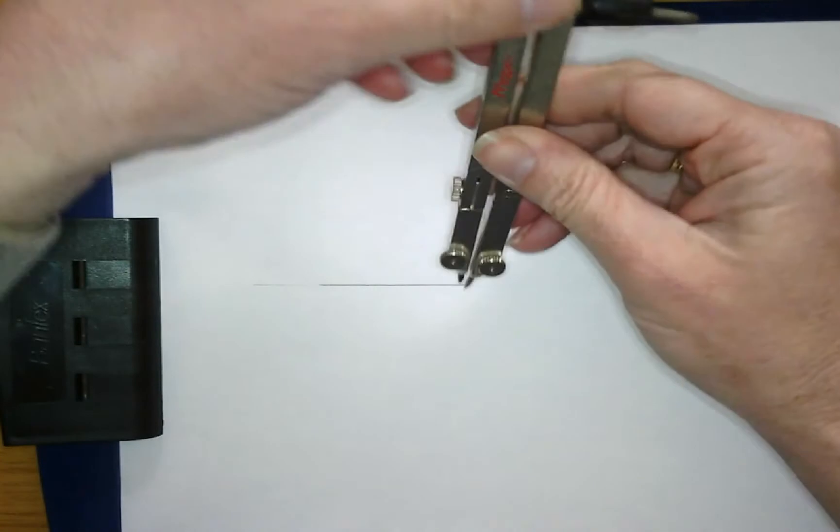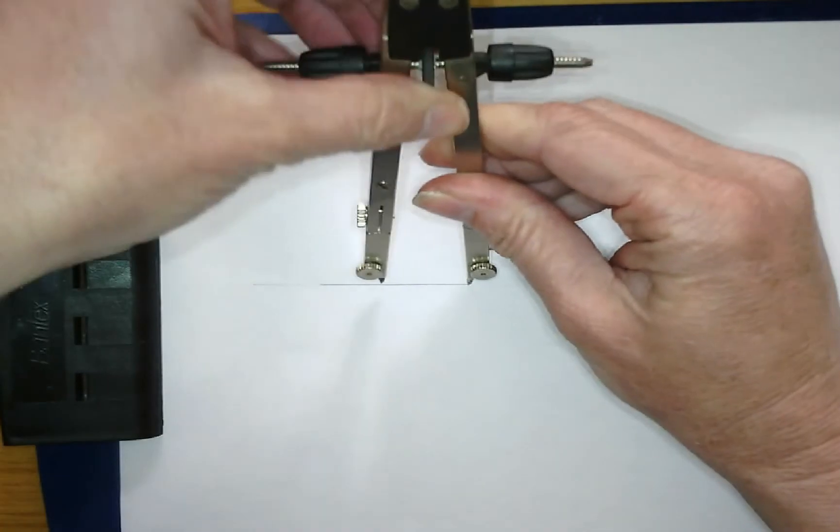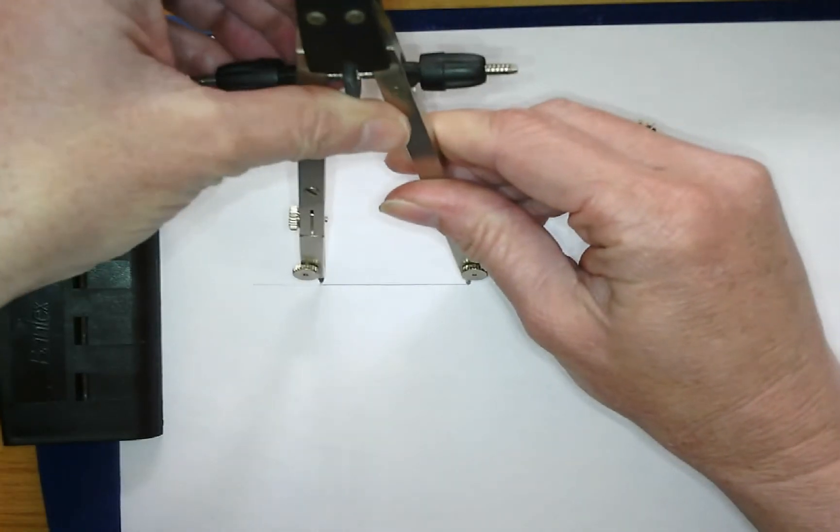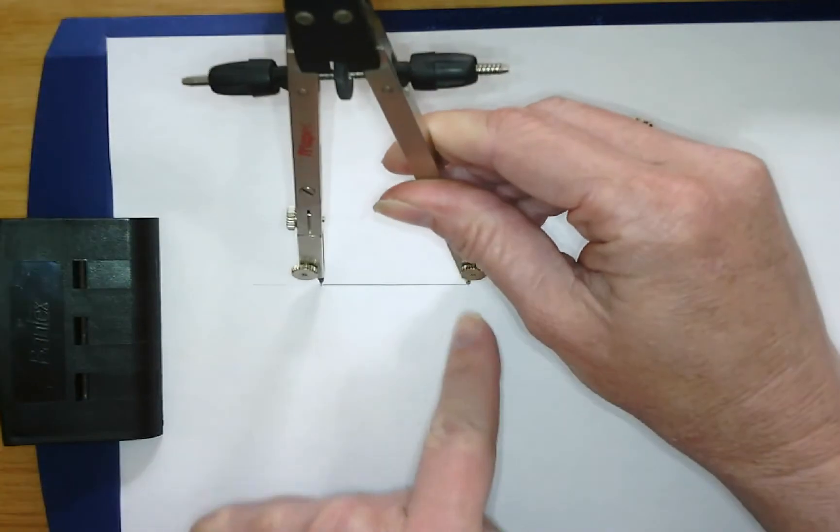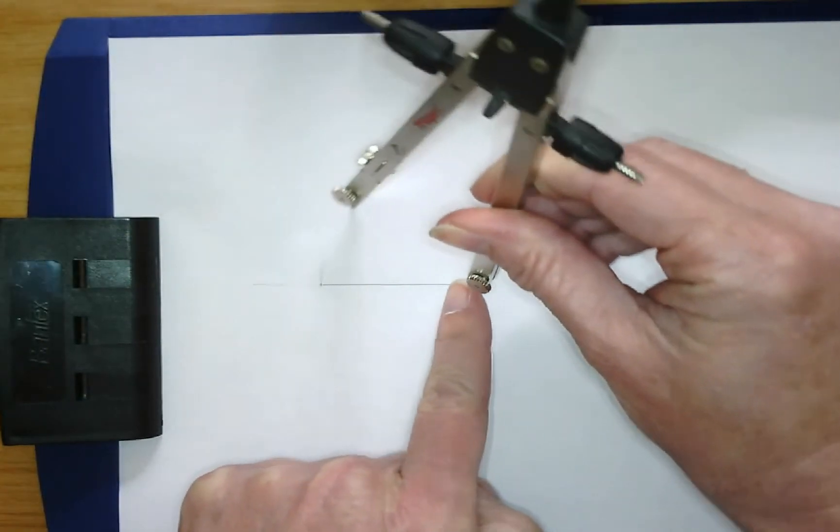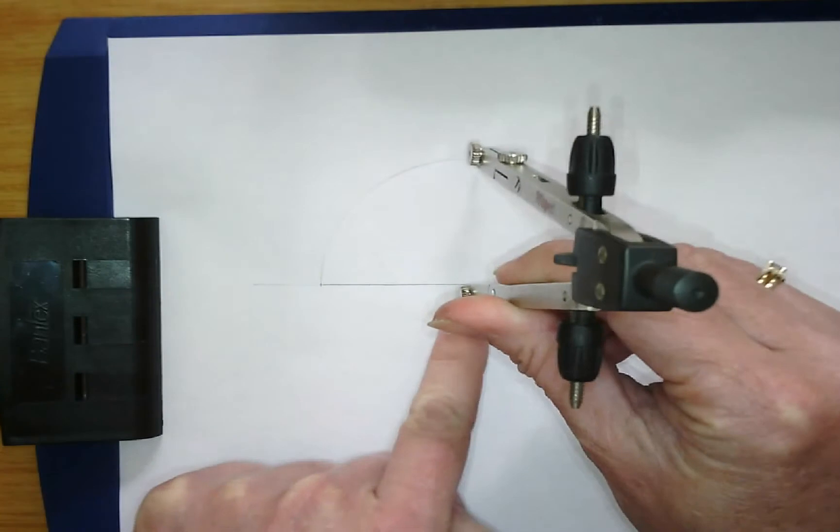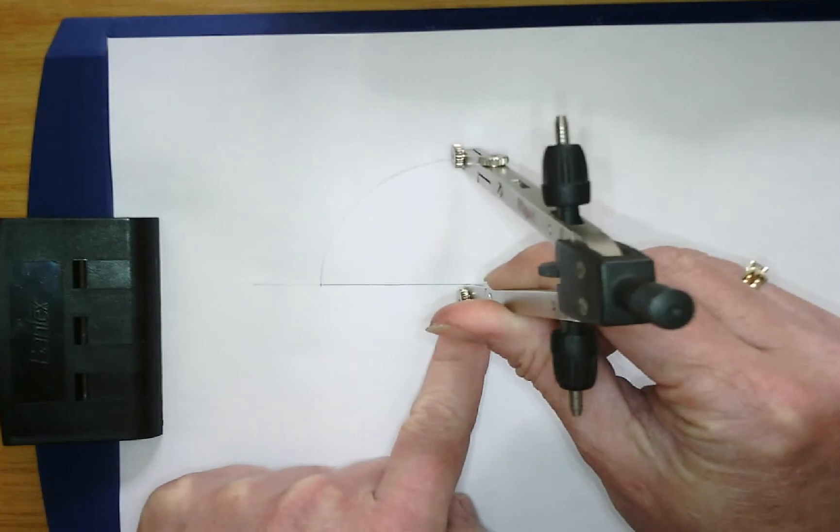Take your compass, open it out, place the points on one end, making sure that your compass doesn't slip. Focusing on this edge here, you scribe an arc.